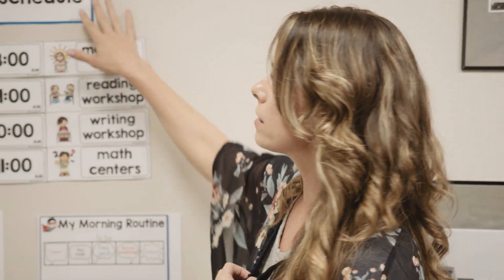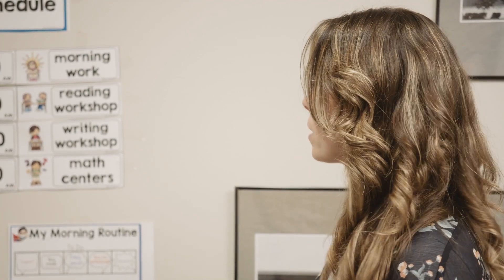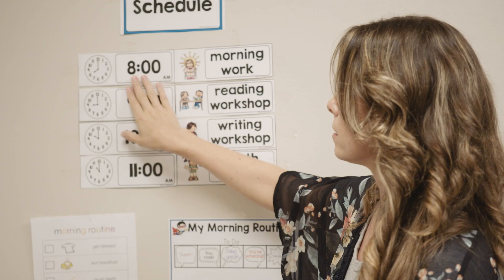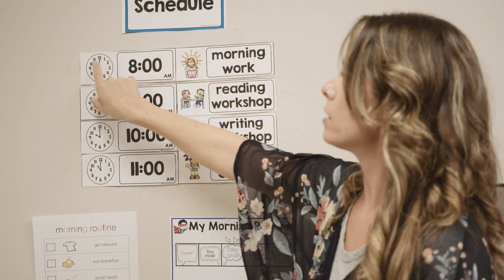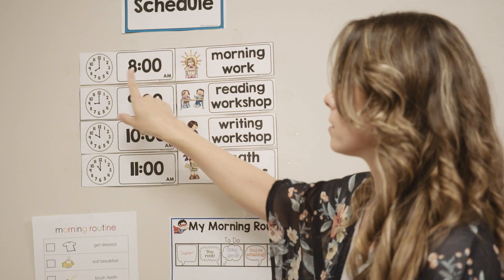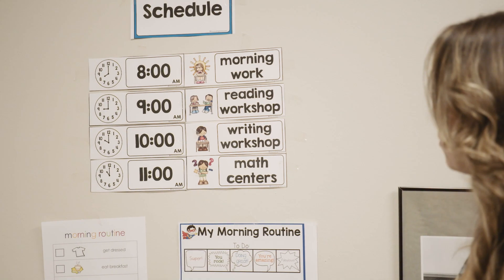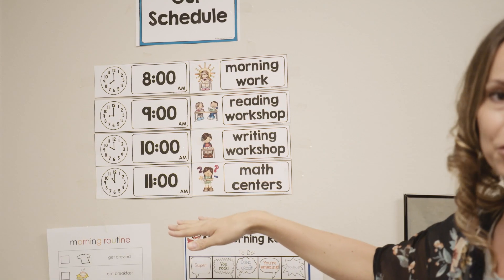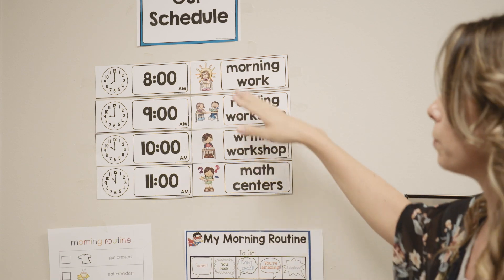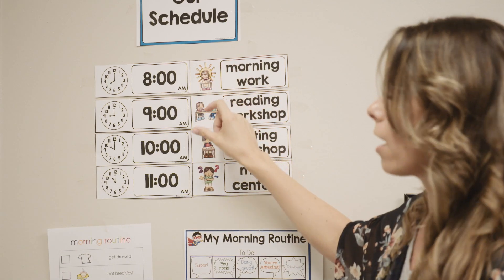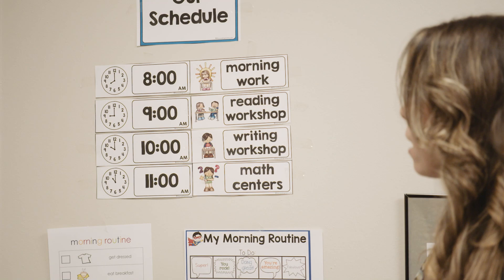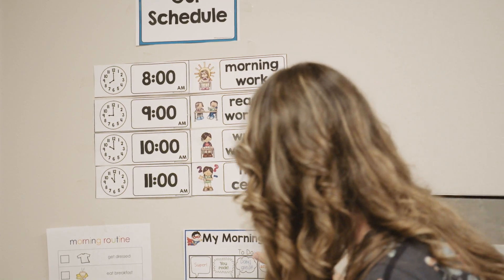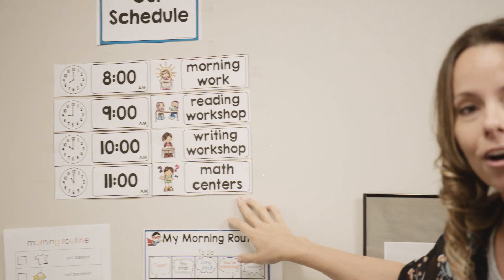This is the type a lot of elementary teachers or self-contained classrooms use. You can see it has the time and actually shows it on a clock so students can associate the time with the clock as well, and then it has the task and visuals. You can do them by the quarter hour, half hour, or by the hour. This was also a free resource from thisreadingmama.com.